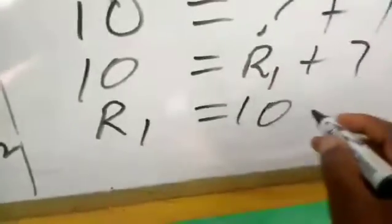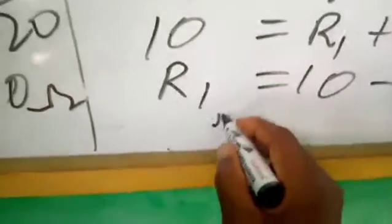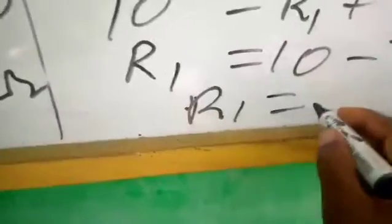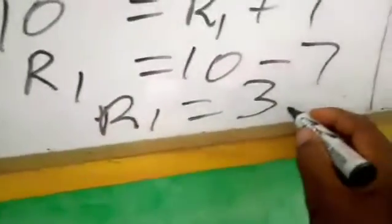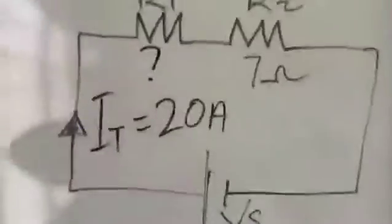R1 is equal to 10 minus 7, so R1 will give you 3 ohms. So as you can see, R1 will give us 3 ohms.